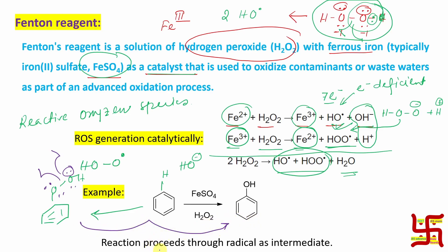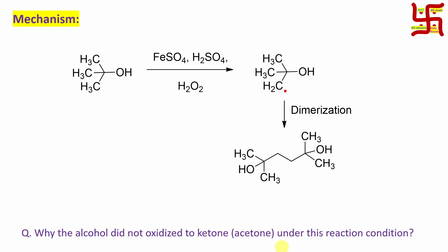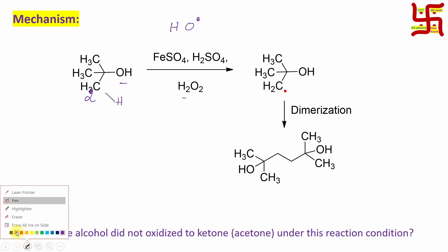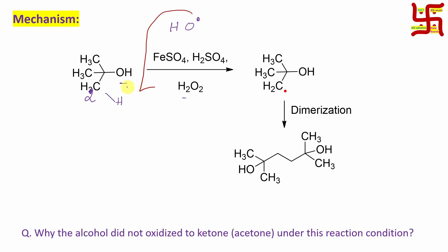Remember, the reaction proceeds through a radical intermediate. This could be one MCQ — what is the intermediate? Radical, carbocation, carbanion, or carbene-like species? Here we are using a half-arrow — why? Because we are talking about the movement of a single electron. That's why this is called a fish hook arrow. Fish hook, as the name suggests, is used to catch fish — and here it represents the movement of a single electron. So radicals are reacting.